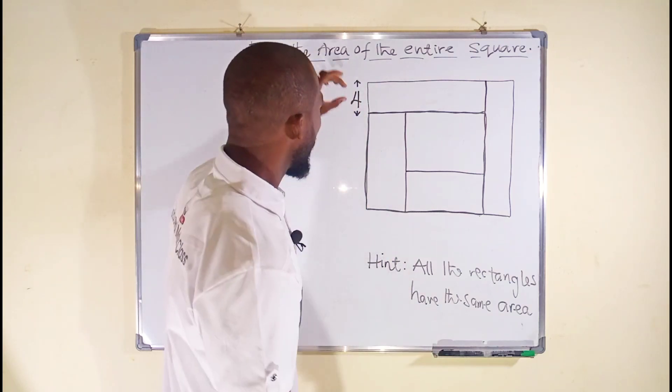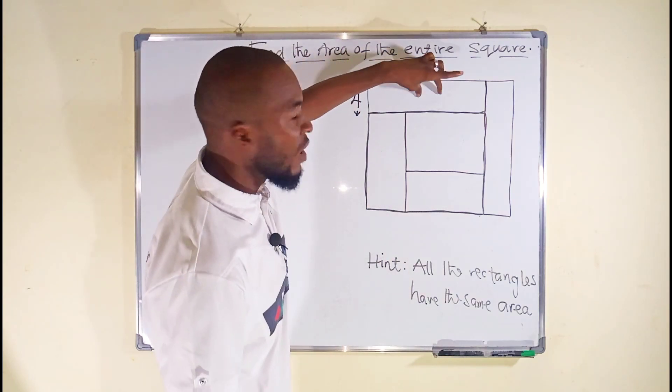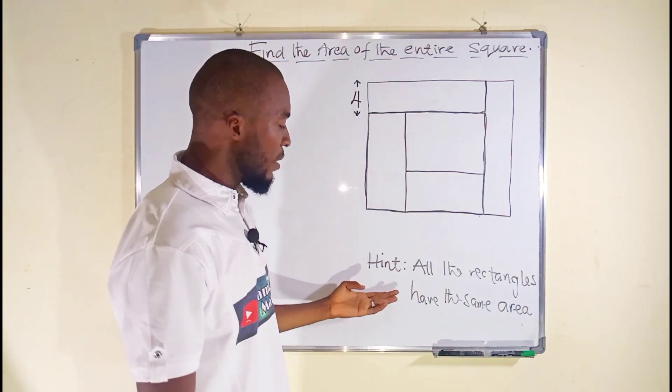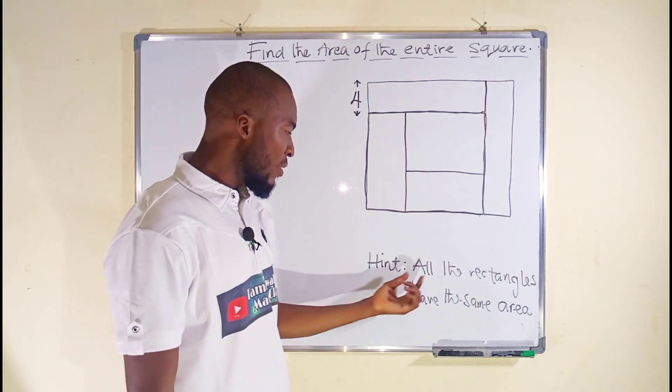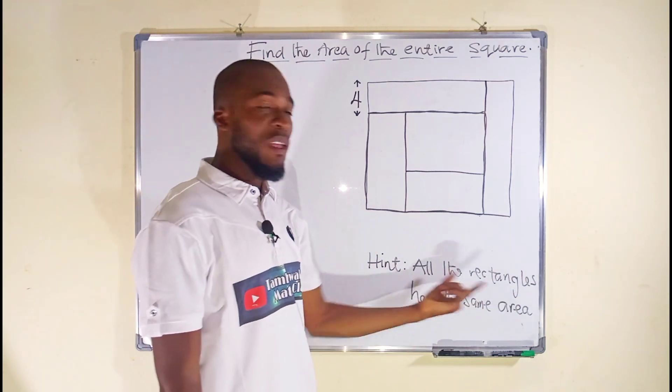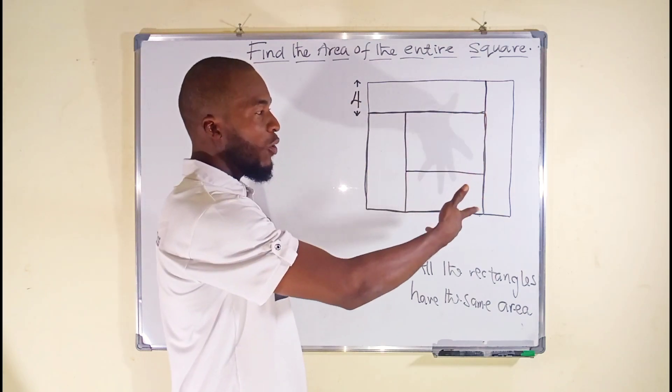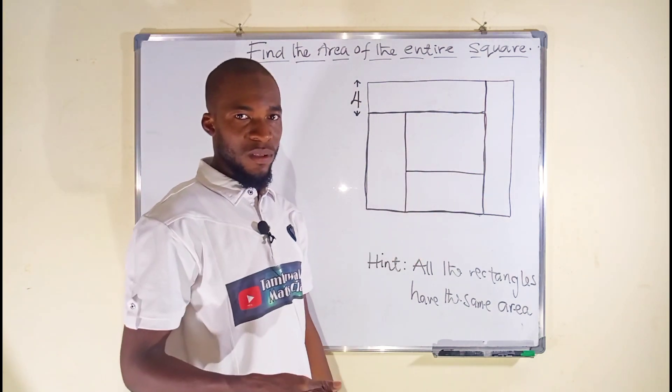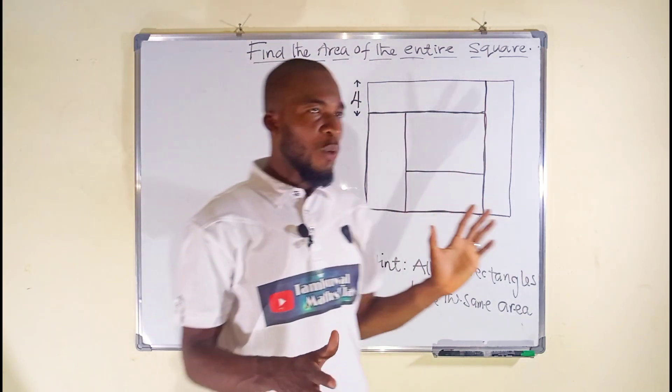But we are only given a width of this rectangle. But look at the hint: it says all the rectangles have the same area. So we have five rectangles here of equal areas.